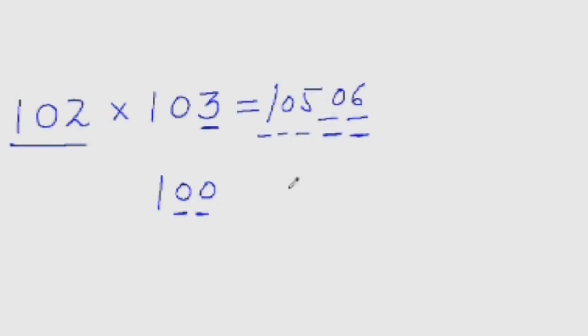I am explaining it to you, so I have to put down everything, but you need not do all that thing. You are just seeing these numbers. Can't you say that the answer would be 10506? Just in your mind add this 3 to 102, which is not a very difficult thing to do. So you will get the first 3 digits. Now for the last 2 digits, all you need to do is multiply this 2 with 3. So put 06 there. As simple as that.